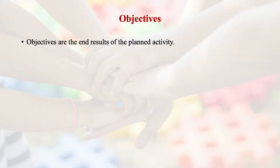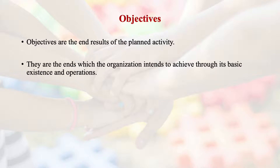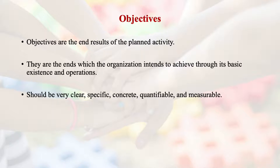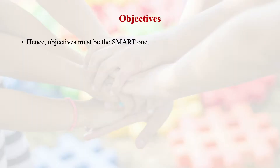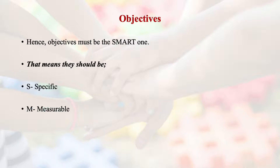Objectives are the end results of planned activity — the ends which the organization intends to achieve through its basic nature and operations. These should be clear, specific, concrete, quantifiable and measurable, and related to a timeframe. An objective must be SMART: Specific, Measurable, Achievable, Relevant, Realistic, and Time-bound. For NGOs, objectives should be as measurable as possible for assessment of results, assessment of strategic gaps, and audit.